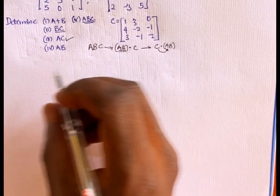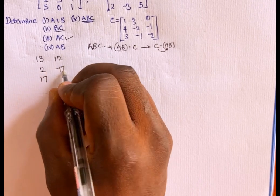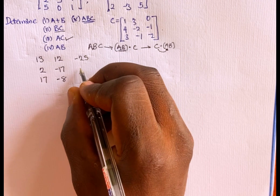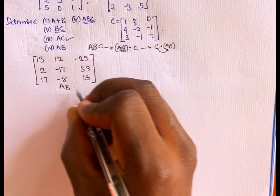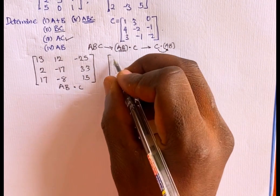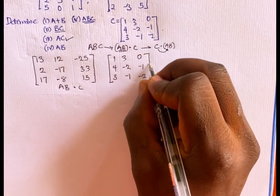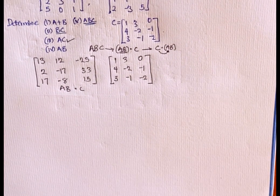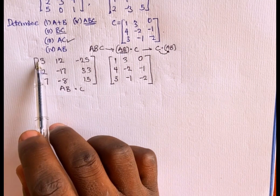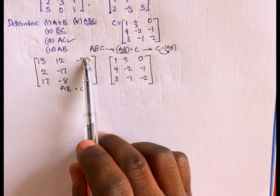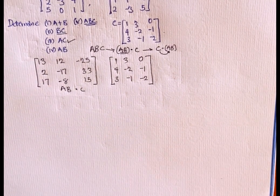Our matrix AB is [13, 2, 17; 12, -17, -8; -25, 33, 15] and matrix C is [1, 4, 3; 3, -2, -1; 0, -1, -2]. You follow the same procedure: pick the first row of AB and multiply by the first column of C, then the second column, then the third column, continuing for each row. Drop your answer in the comment box below and I will verify if it is right or wrong.